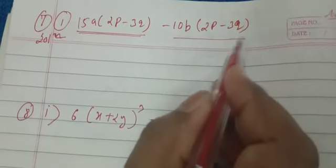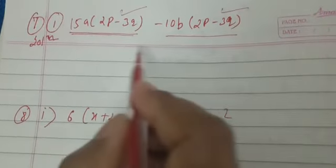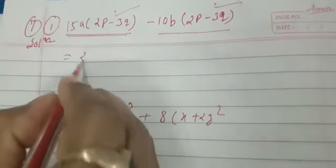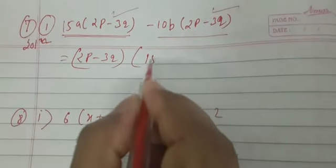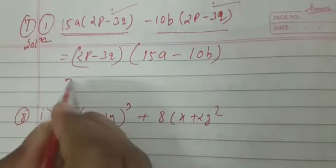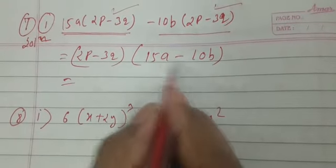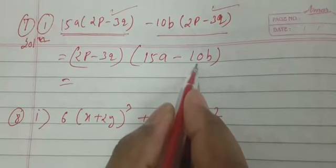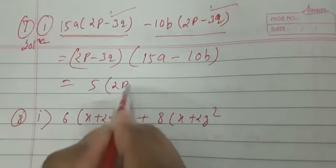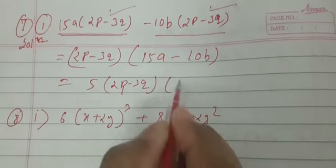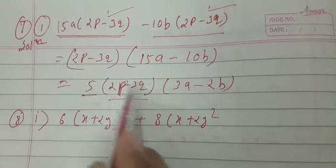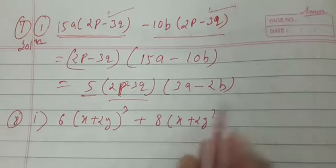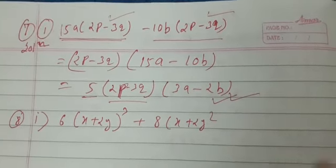The first term and second term of this algebraic expression share the common factor (2P minus 3Q). So we take (2P minus 3Q) as common. Inside the bracket, what is left is 15A and 10B. Again, 15 and 10 are both multiples of 5, so we take 5 as common. The three factors are: 5, (2P minus 3Q), and (3A minus 2B). This is the answer to question 7(i).